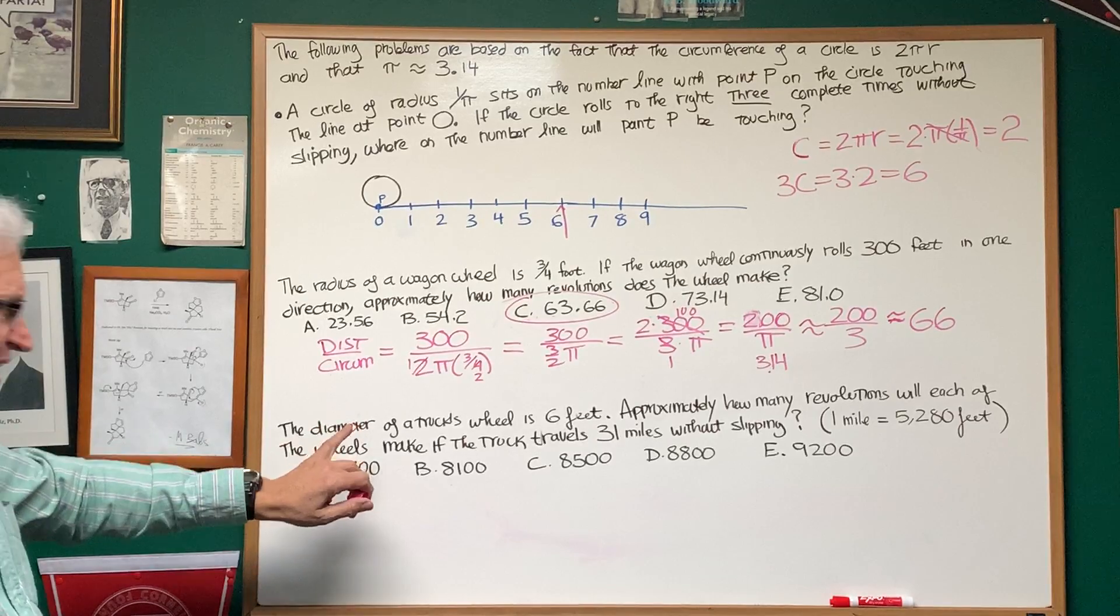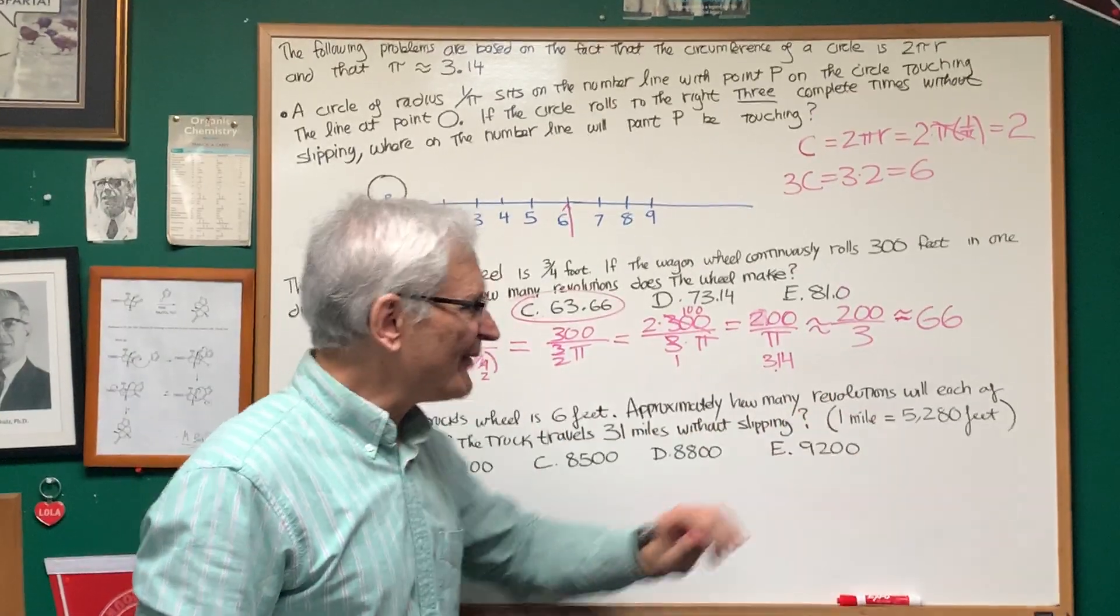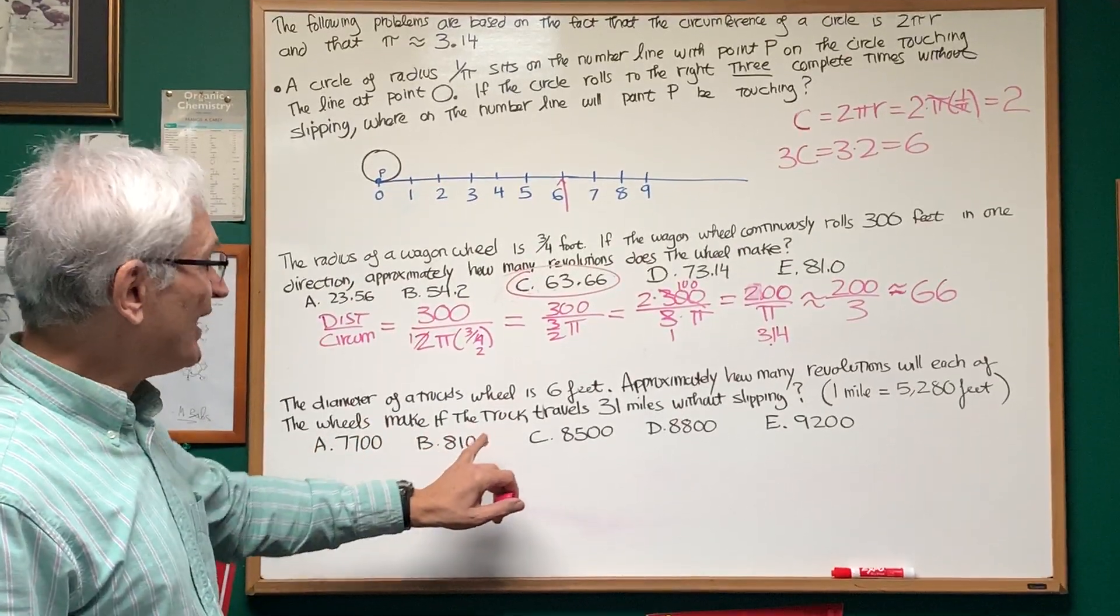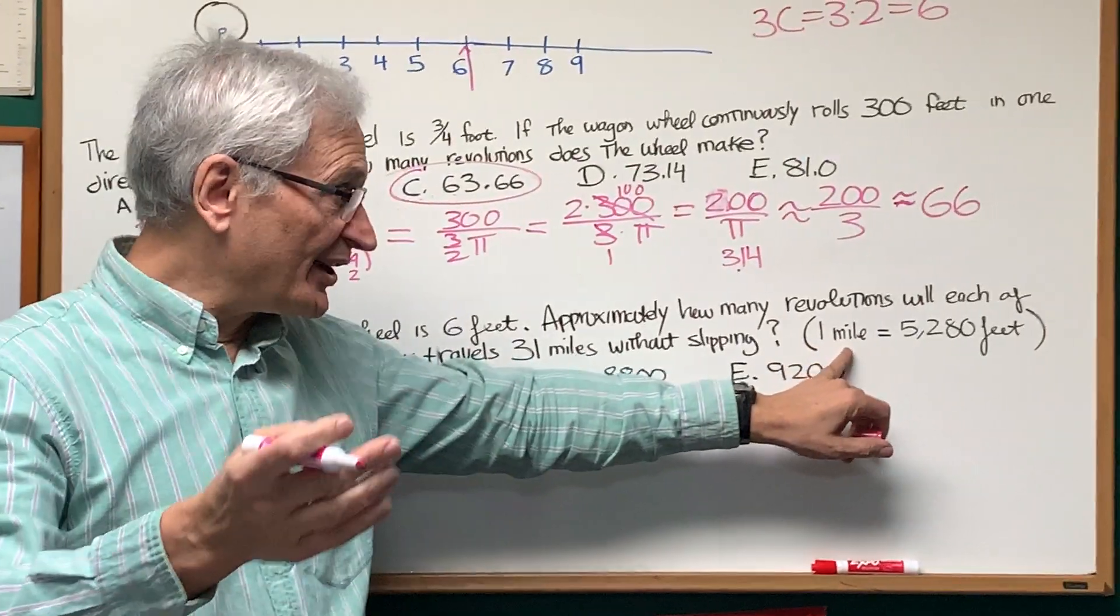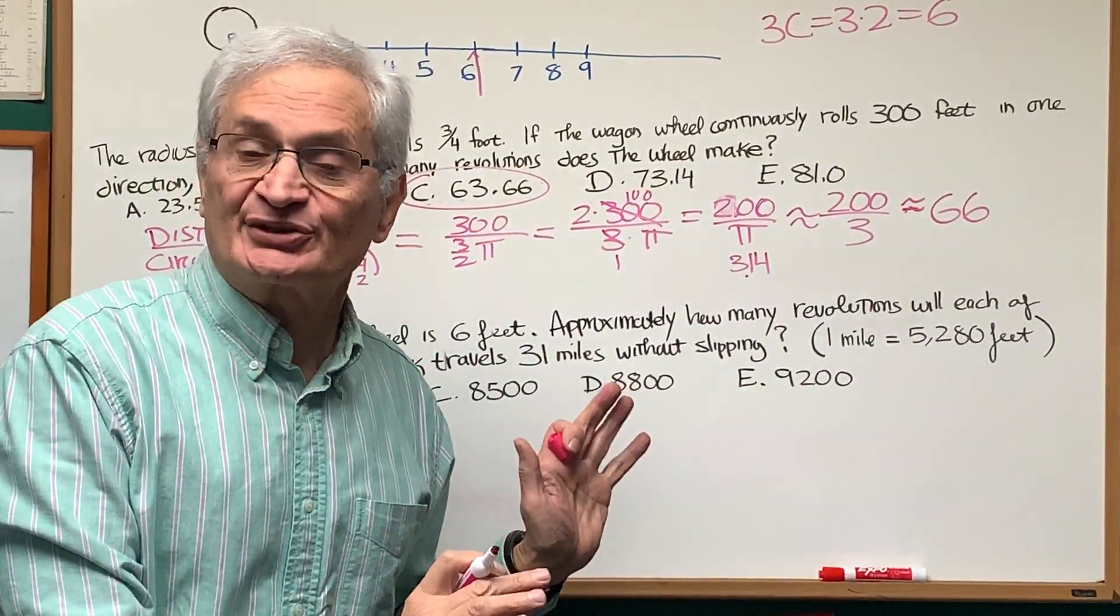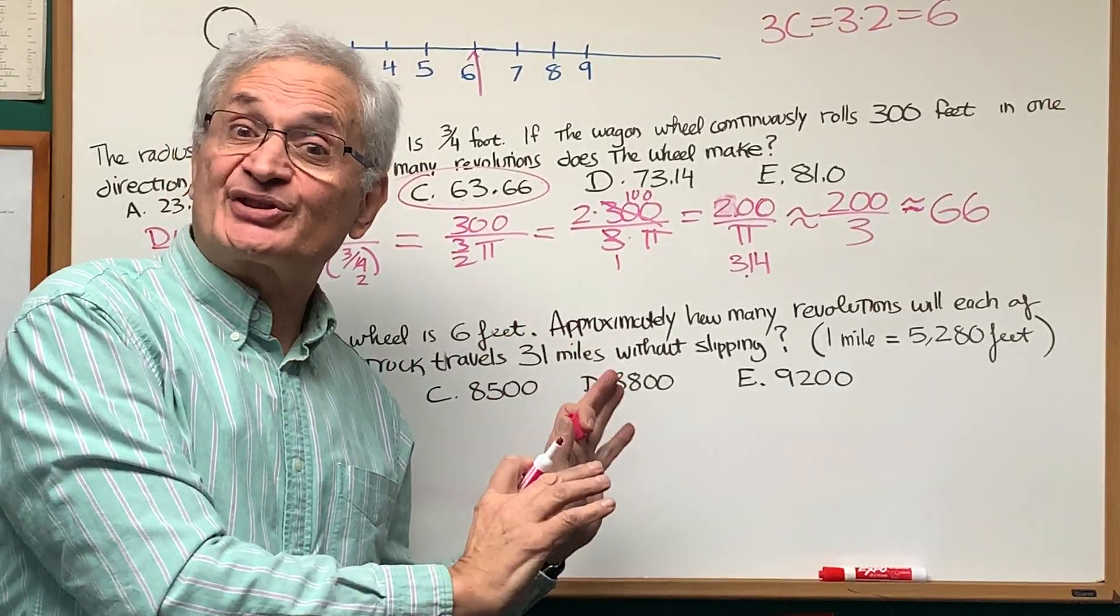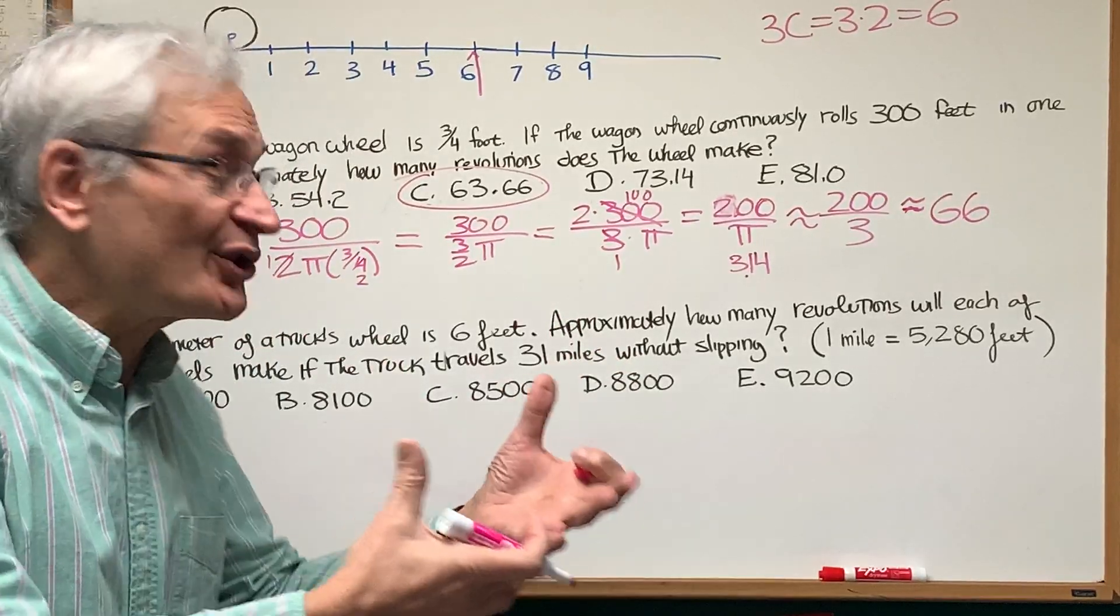Final problem. The diameter of a truck wheel is 6 feet. Approximately how many revolutions will each of the wheels make if the truck travels 31 miles without slipping? Hint or reminder, 1 mile is 5,280 feet. This is very similar to the previous problem. What makes this interesting is the art of approximation that we will be using in the course of the solution.